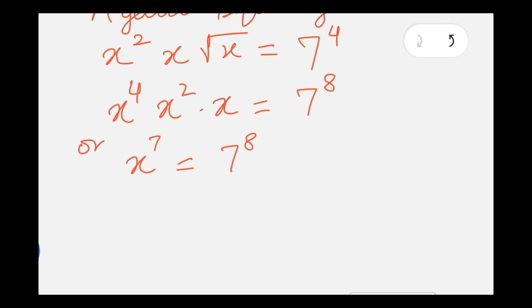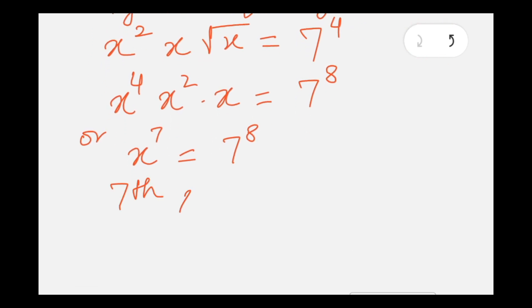Now in order to get value of x, we have to take seventh root of both sides, so that is x equals to, which will give us x equals to seventh root of 7 to the power 8.